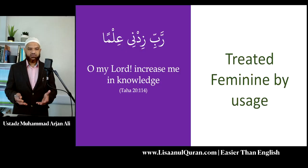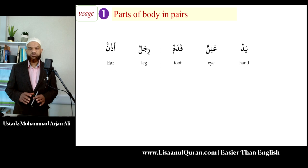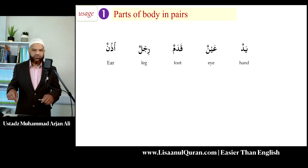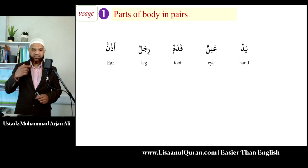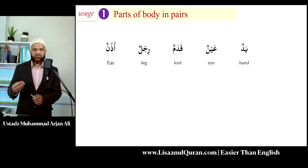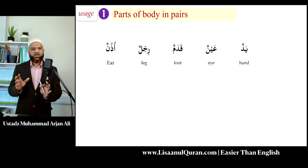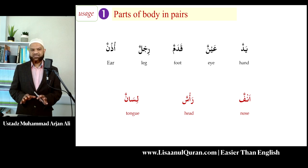Now let's go through the categories of isms treated as feminine in Arabic based on usage. The first category is body parts that come in pairs. Examples: yadun (hand), a'inun (eye), qadamun (foot), rijlun (leg), udhun (ear). Because I have two of each, these words are treated as feminine. By contrast, body parts that are single - such as anfun (nose), ra'asun (head), and lisanun (tongue) - are treated as masculine.